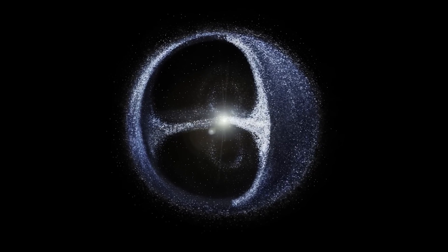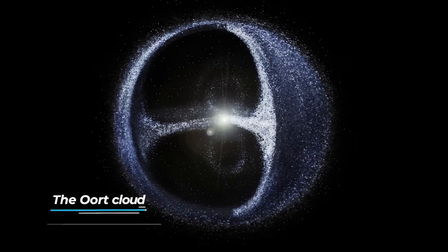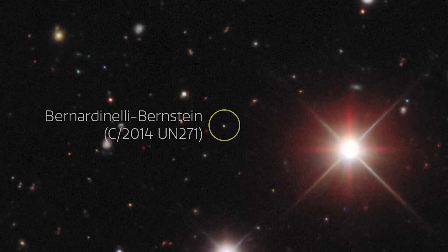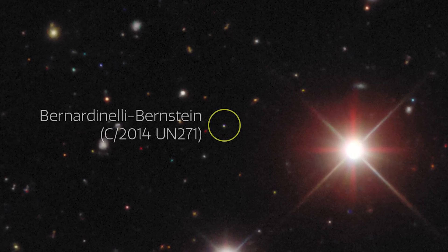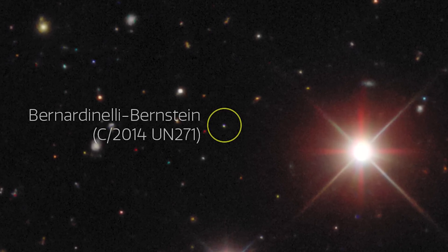What if I told you that a giant comet coming from the Oort cloud is approaching our solar system? Follow me in this video to get to know more about Comet Bernardinelli-Bernstein, also known as C-2014-UN271.